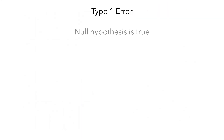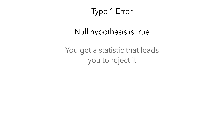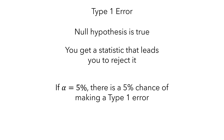In summary, a type 1 error is when the null hypothesis is true, but you get a statistic that leads you to reject it. If you use an alpha value of 5% — that is, if you use 5% as the p-value threshold for whether a statistic is strong evidence against the null hypothesis — then there is a 5% chance of making a type 1 error. You do have some control over this: you can reduce this probability by using a smaller value of alpha.